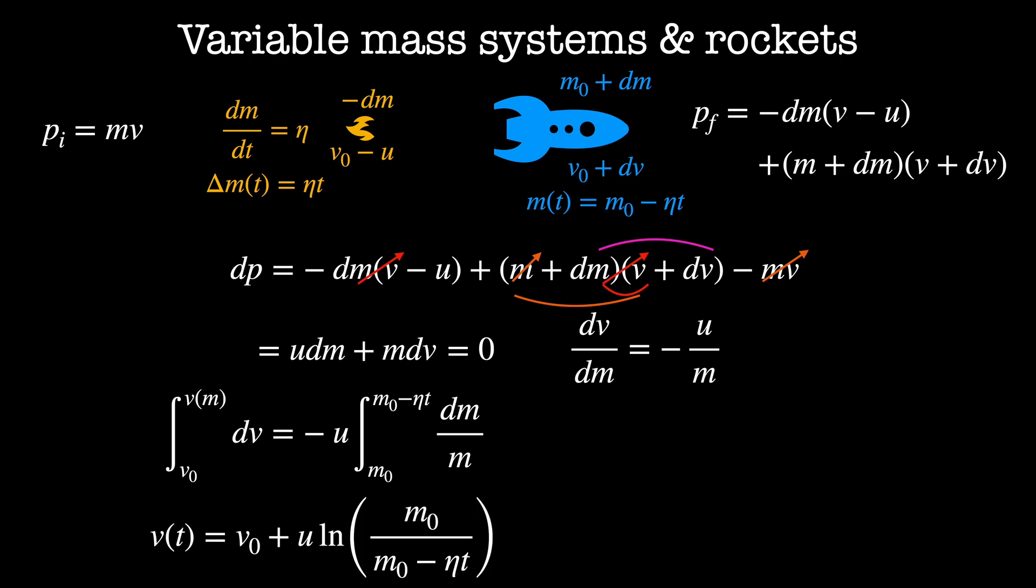This gives me velocity as a function of time is equal to the initial velocity plus u times the log of the initial mass divided by mass as a function of time, which is m-naught minus eta t. This is often called the rocket equation.